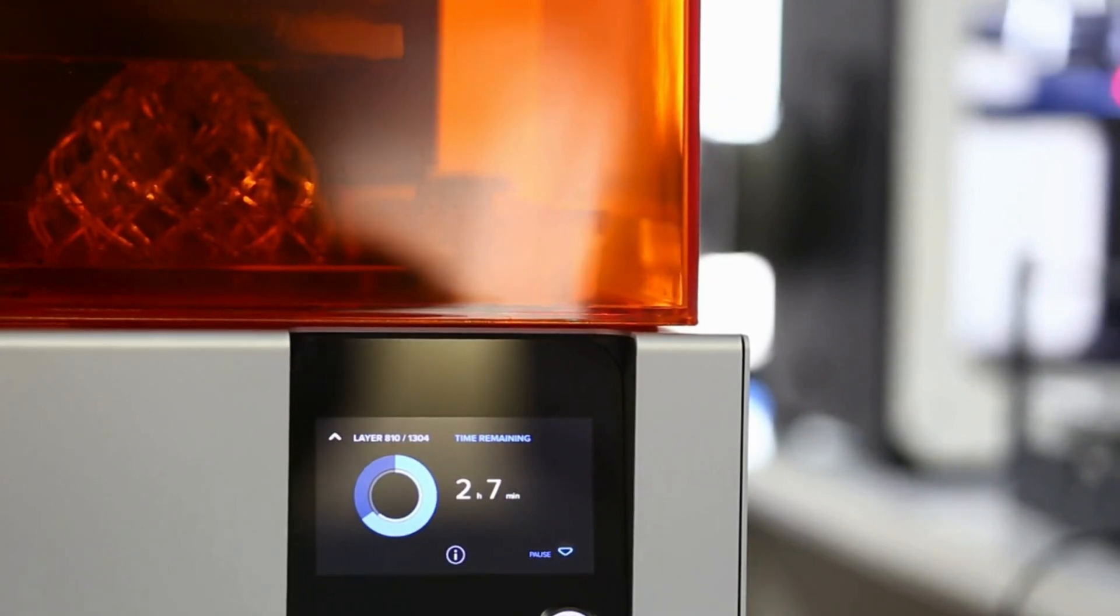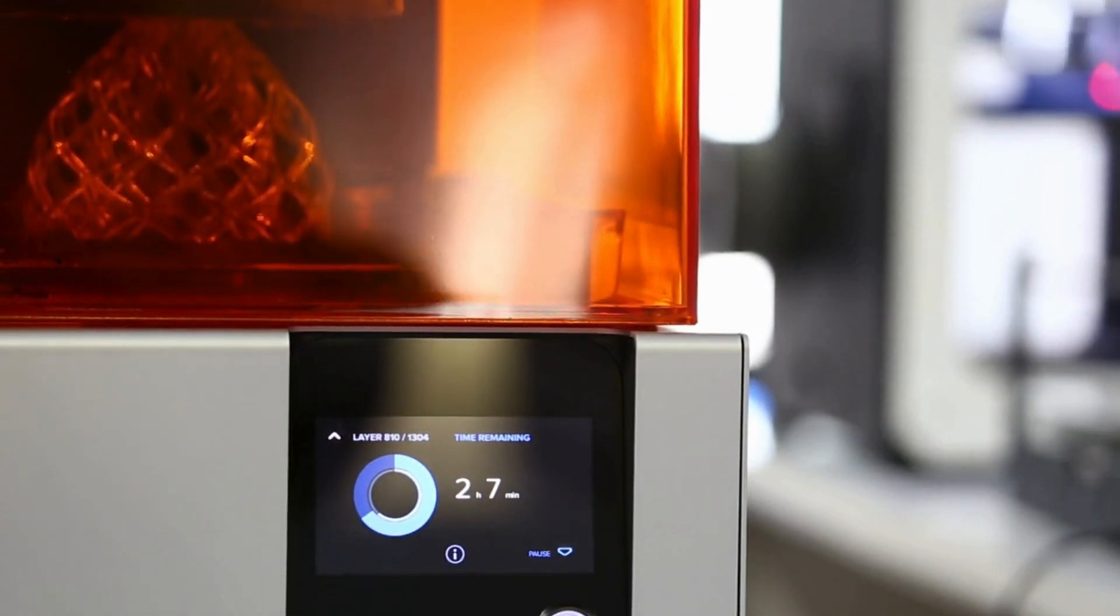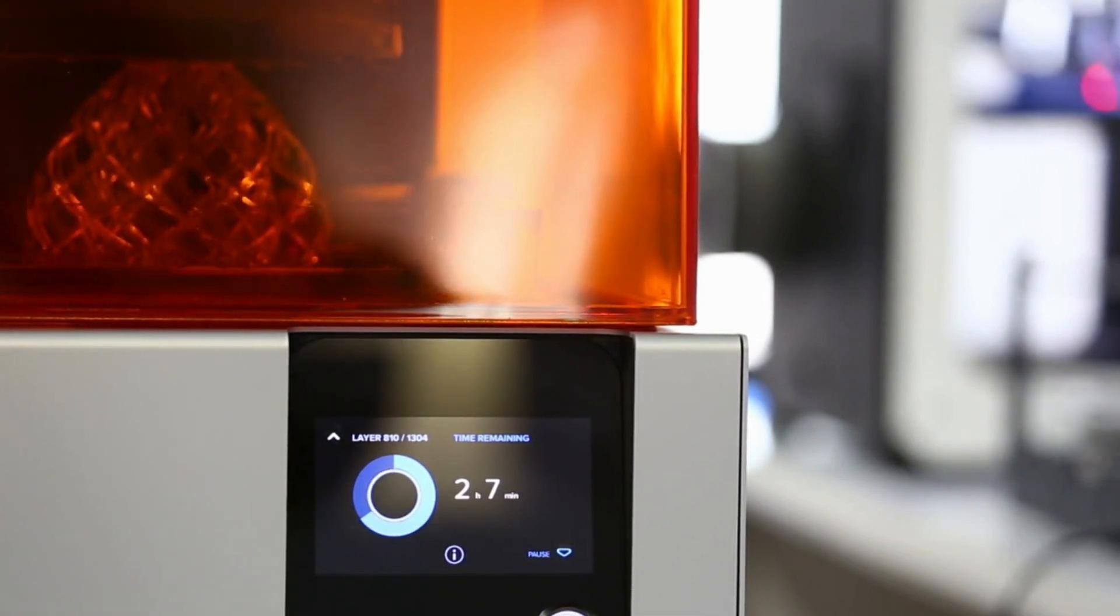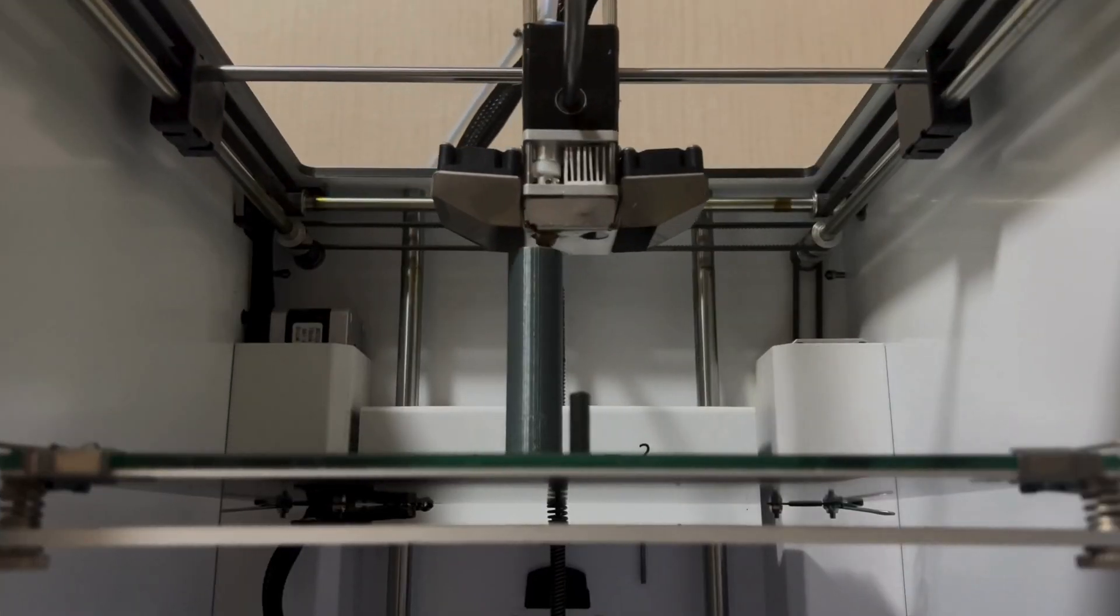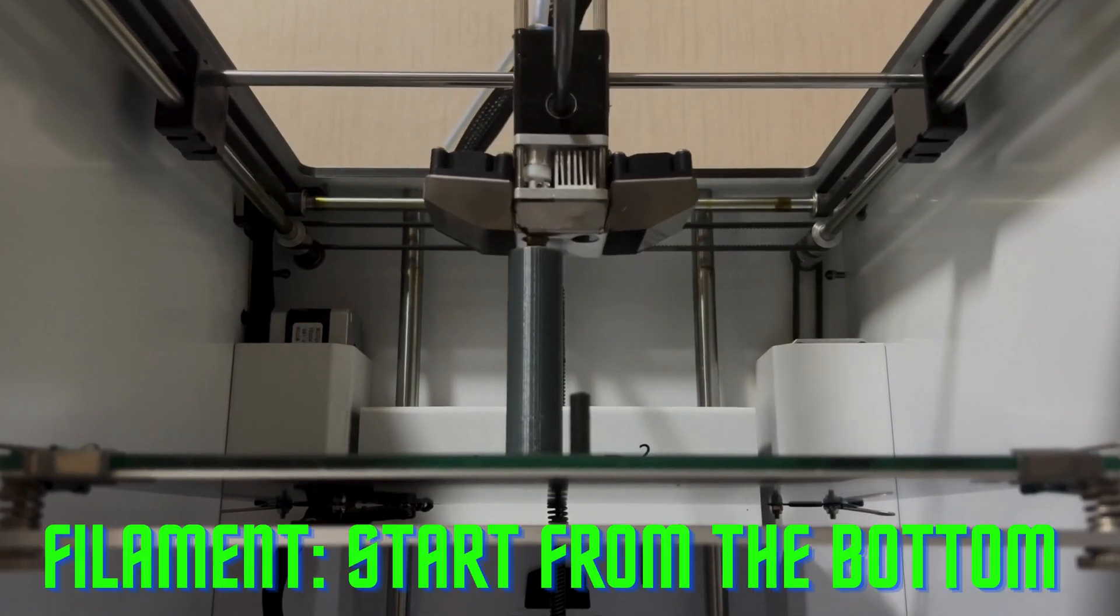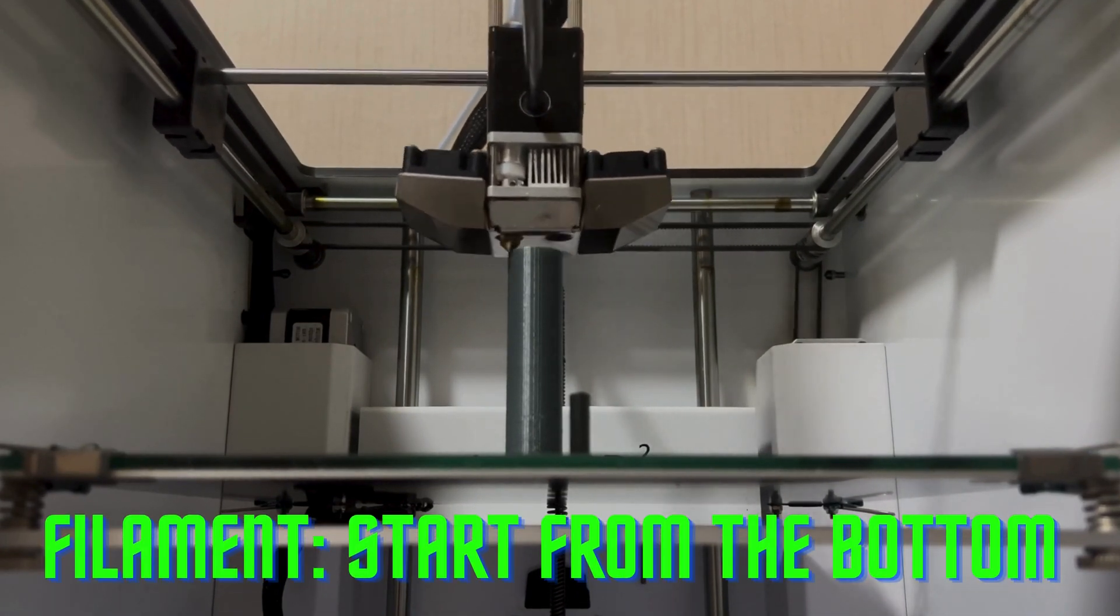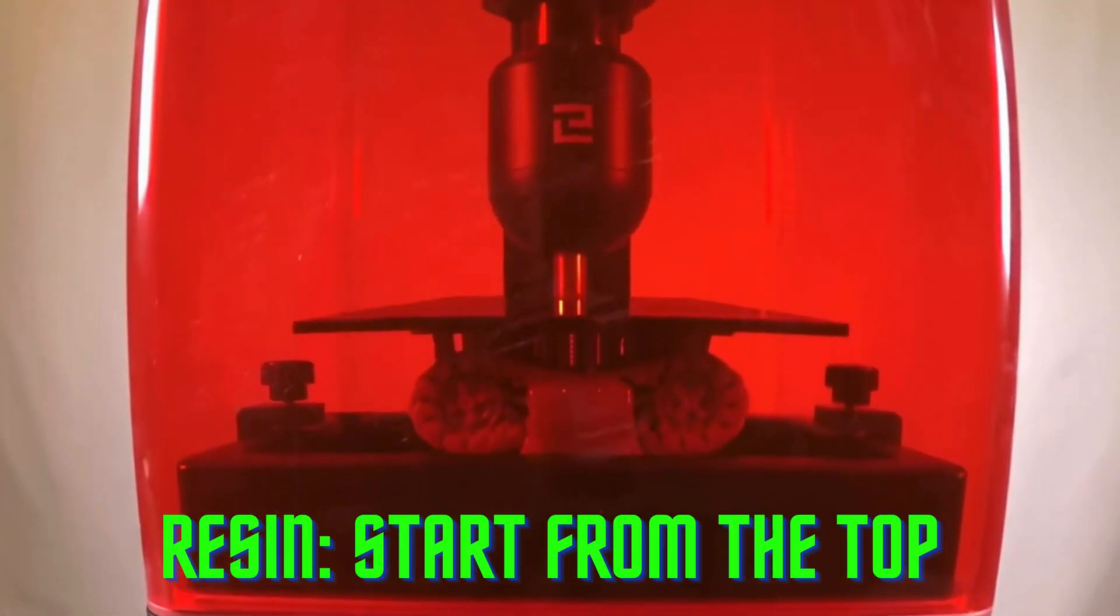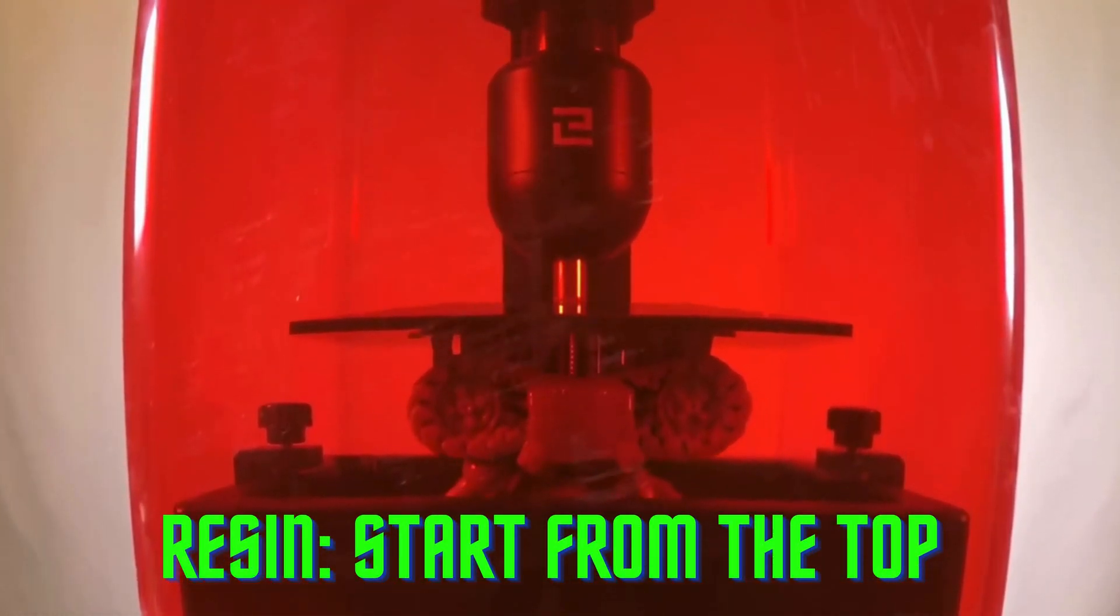Another difference is the way the printers work. Filament printers start from the bottom and build up the object layer by layer. Resin printers start from the top and build down the object layer by layer. But what are the advantages and disadvantages of each type of printer?